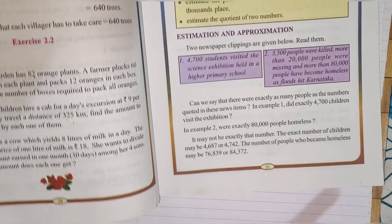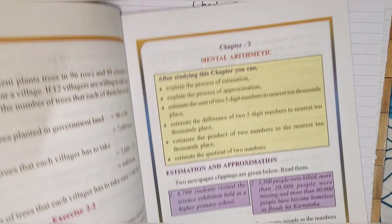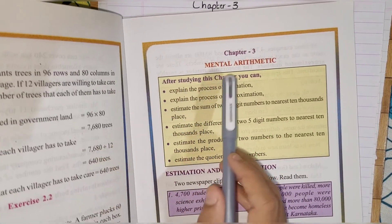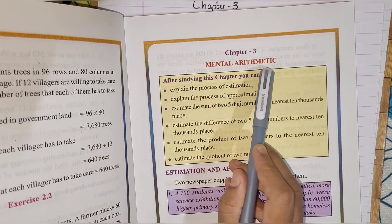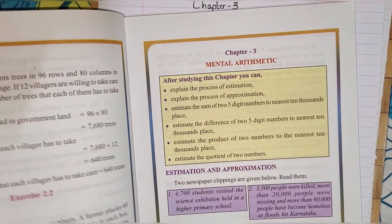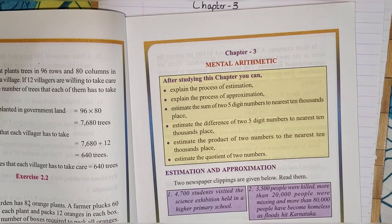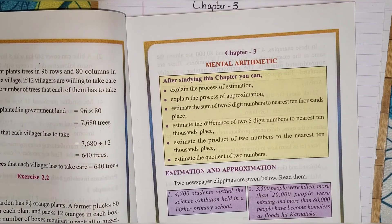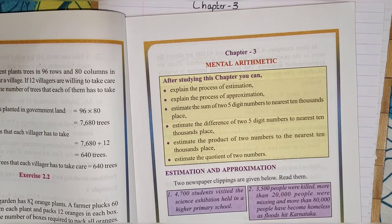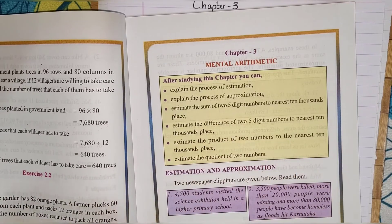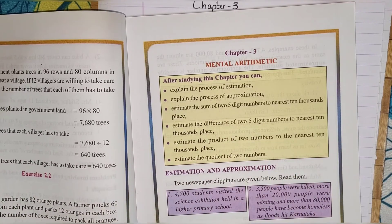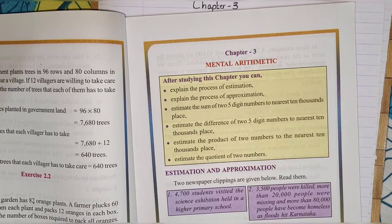Here it is — page number 21, chapter number 3, that is Mental Arithmetic. Children, you have already learnt this lesson in third and fourth standard with three-digit and five-digit numbers. But here we are going to study with five-digit numbers. So let's start from the exercise part.